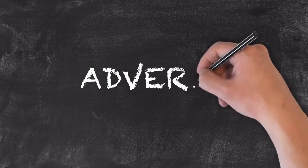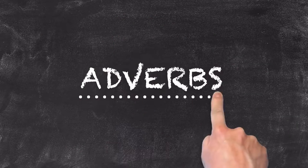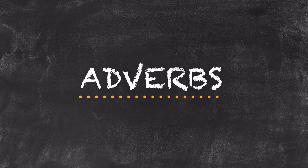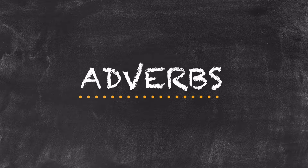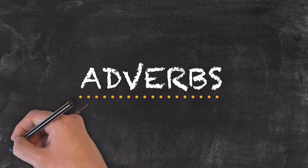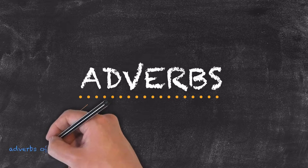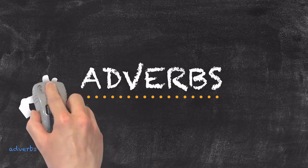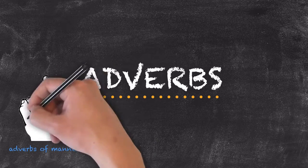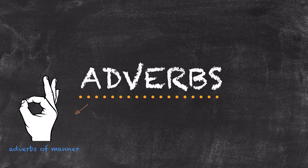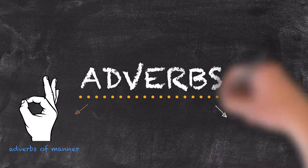Now let's move on to our adverbs. Rather than describing nouns, our adverbs describe our verbs. There are four types of adverbs when describing verbs. The first is manner — these describe how things are done. Two examples are quickly and cleverly.